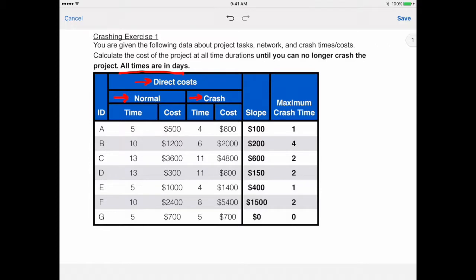So from that, the slope and the maximum crash time has been given or calculated for us. That's called slope because if you recall, if we were to graph out our time and our costs, we would have our normal time and cost over here, and we'd have our crash time and cost here, and this is basically the slope of that line. So we know, for example, that for B we can crash it up to four days, and it's going to cost $200 per day. Just remember whenever it's presented as slope that we have to know that that's per time increment already.